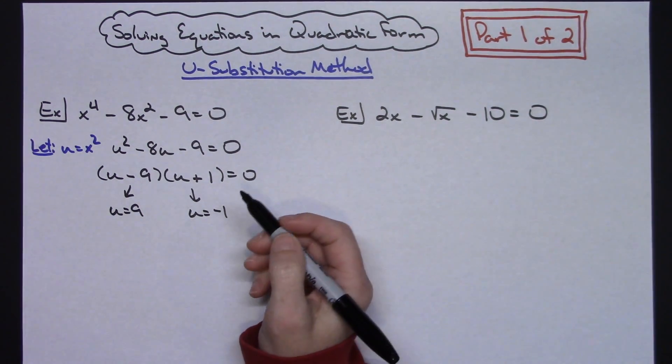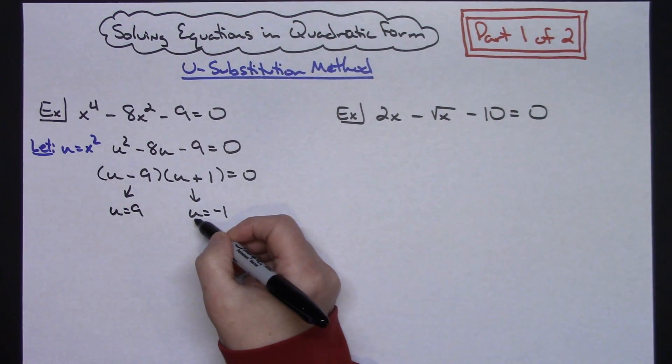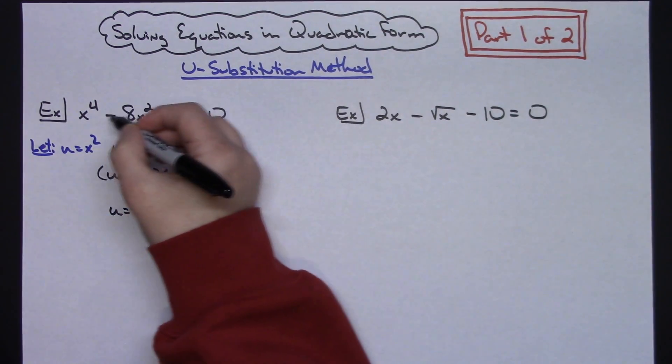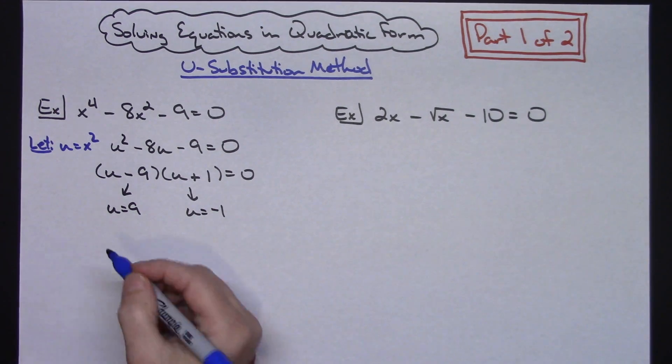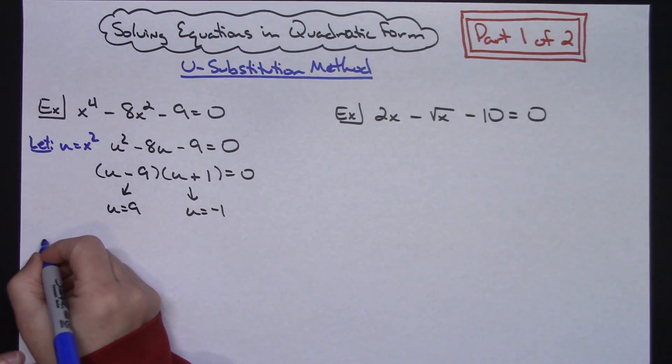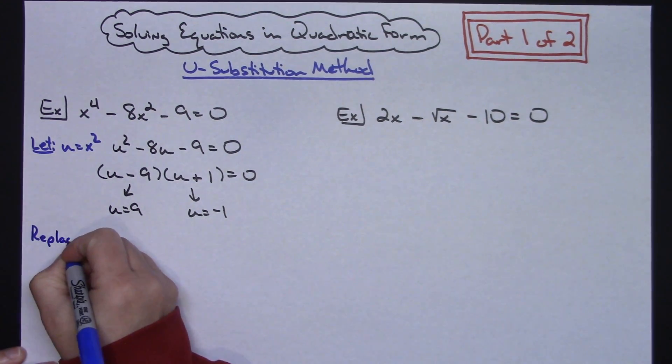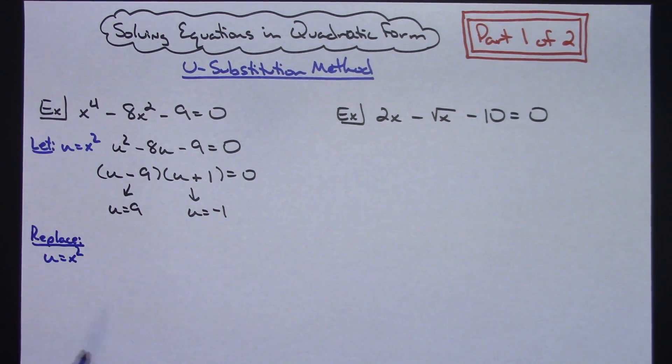Now a lot of times, probably the number one mistake would be students want to stop right here and say those are the answers. However, you have solved for u in this scenario. And the original equation is in terms of x, so that means we're not quite done yet. So at this point, you need to replace u with your x^2.